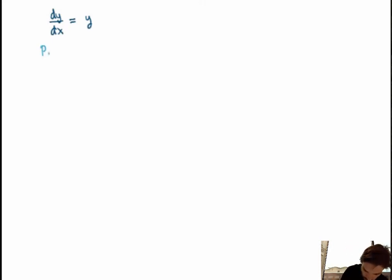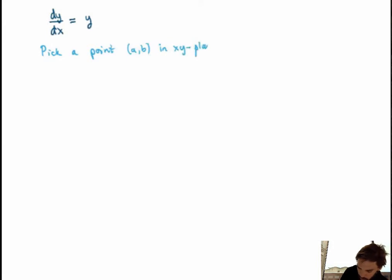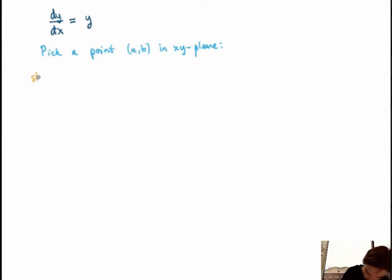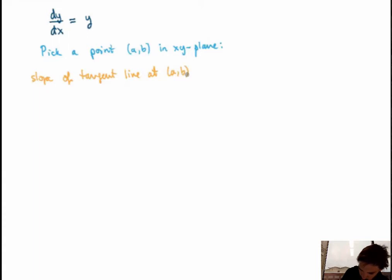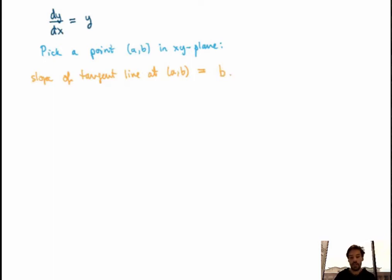So what is it saying? Pick a point — your favorite point (a, b) — in the xy plane. The left-hand side is saying that the slope of the tangent line to a solution at this point should be equal to the y-coordinate of that point, which in this case would be just b. If you have a more general equation, the right-hand side will be different, but the equation is relating the slope of the tangent line to solutions to some particular function of a and b.